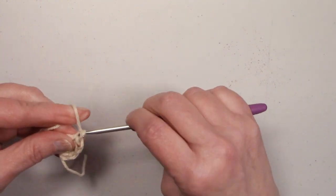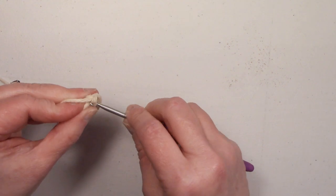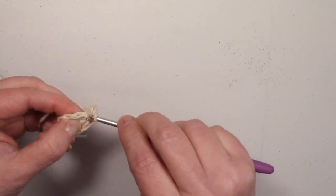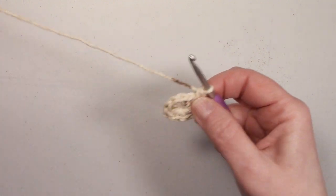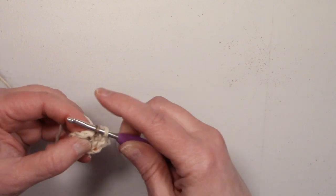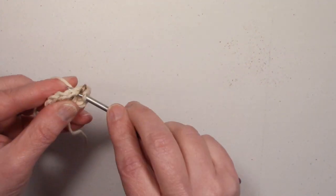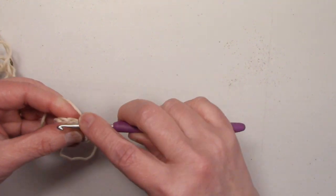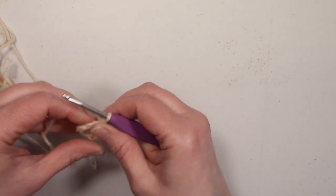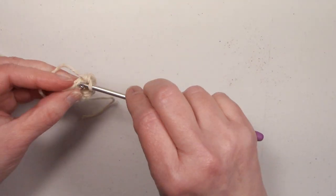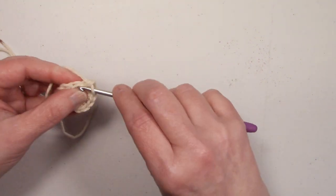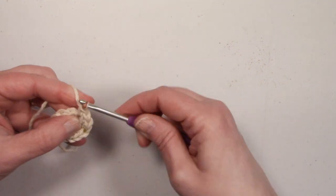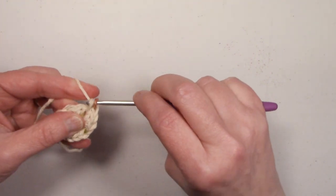To start round two, chain one, and single crochet into the same stitch you just made. And place another single crochet into that stitch. So you're going to place two single crochets into that same stitch. And place two single crochets into each stitch around. Sorry, my yarn is getting tangled. Okay, continue this, going around, placing two single crochets in each stitch, and I'll meet you back up at the end of the round.